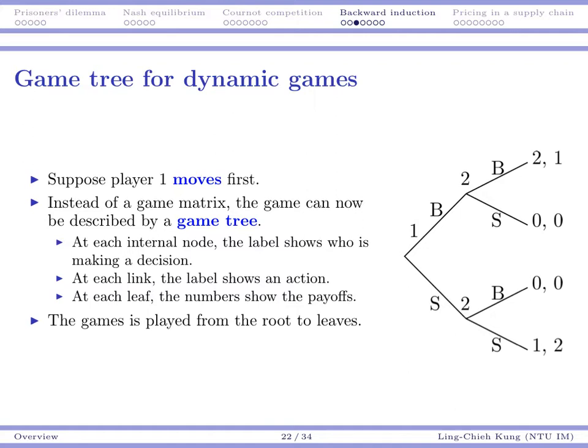And then player two makes the decision about B or S. One important fact here is that when player two makes the decision, player two has observed player one's decision. So what's really important is not the time for them to make decisions. It's about whether they know the other one's decision. It is possible that we play a game where player one makes the decision today, player two makes the decision tomorrow, but they don't know whether the other one has made the decision. If that's the case, then it's actually a static game. What's important is whether you know the other one's decision. Here we assume player two observes player one's decision.